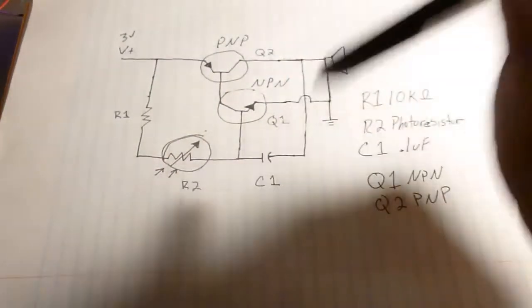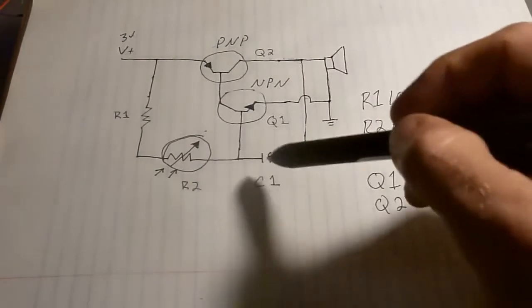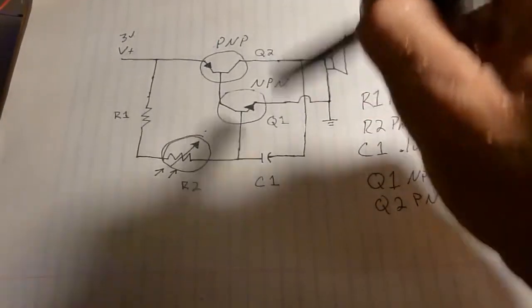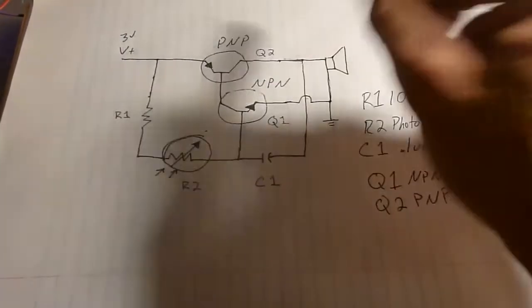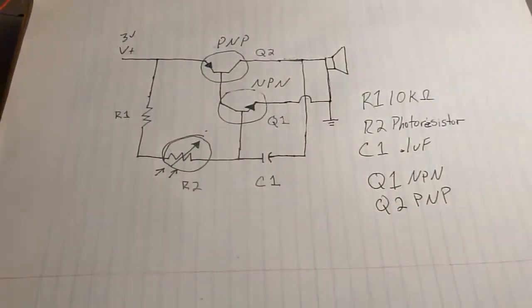It's going to make the current flow across and out this way to the speaker, at the same time discharging C1, the capacitor. And when this discharges it will actually cut off Q1, and then that'll cut off Q2. And then C1 will charge and then the whole circuit will turn off and on and off and on over and over again.